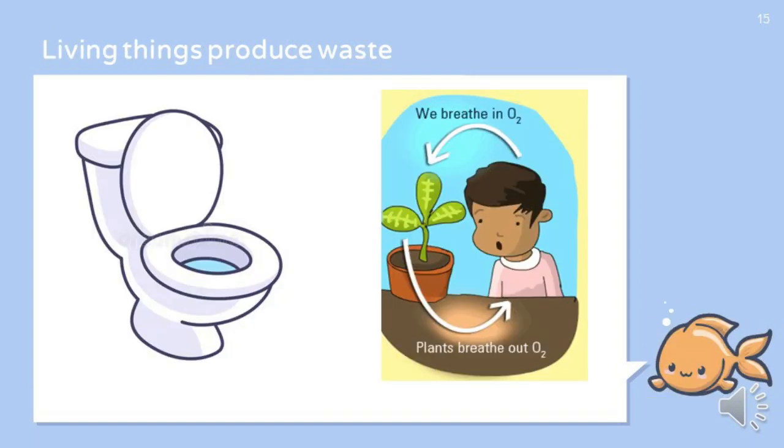Living things produce waste. We all need food and water to live. The food and water which is not used by the human body is passed out from the body as waste. Plants also produce waste. The oxygen we breathe is actually given out by plants as waste when they are making food in the sunlight.